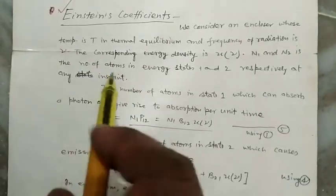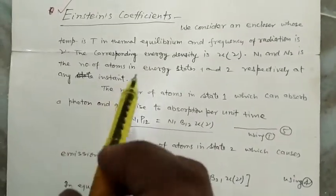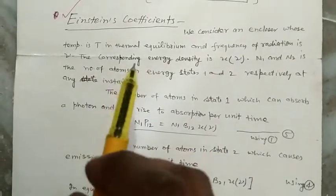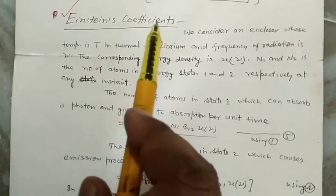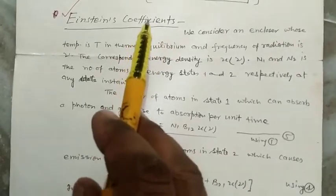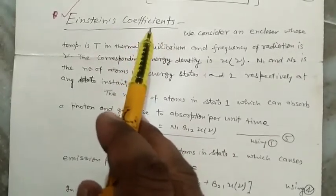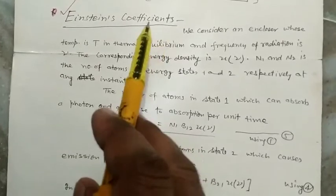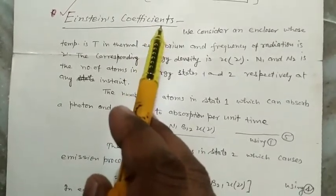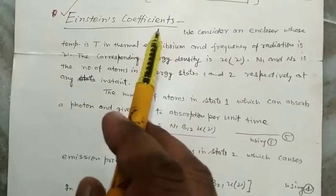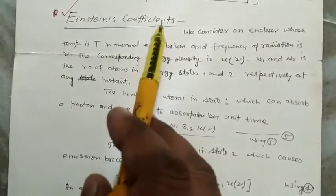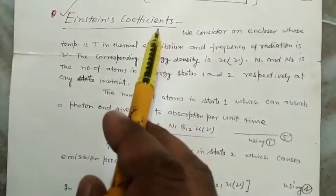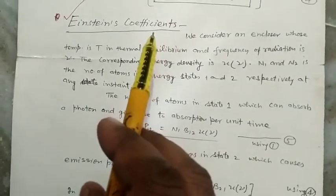Dear students, in the fifth unit of Engineering Physics, our next topic is Einstein's Coefficients. We have already defined all three Einstein's Coefficients: B12 in Absorption of Radiation, A21 in Spontaneous Emission of Radiation, and B21 in Stimulated Emission of Radiation in the previous video.